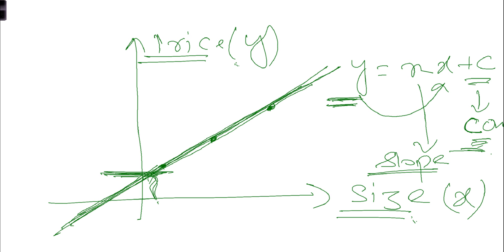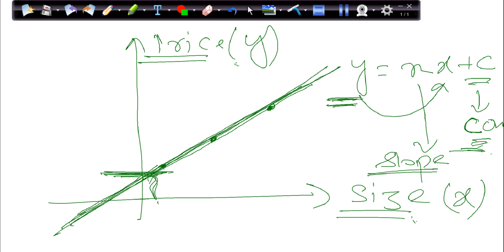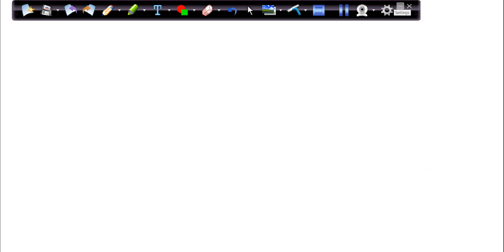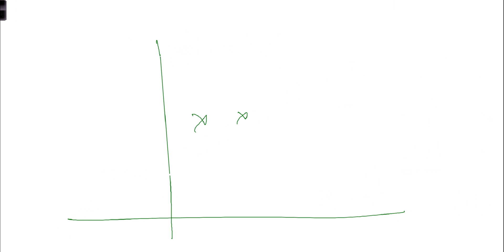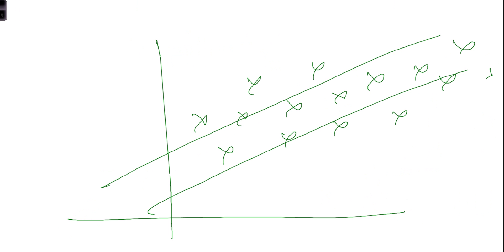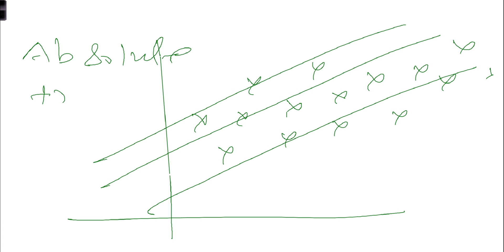The whole goal of linear regression is to find a best fit line among the observations. We have many observations and we want to find the best fit line. There should be some mathematical intuition behind it, so in this video we'll talk about something called the absolute trick, which will help us find the best fit line.